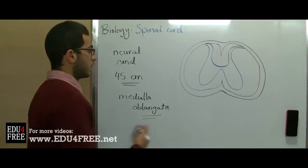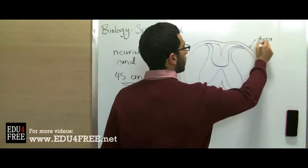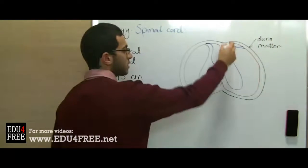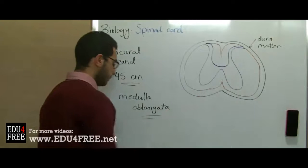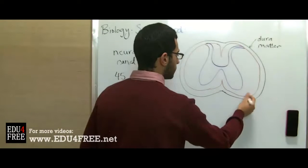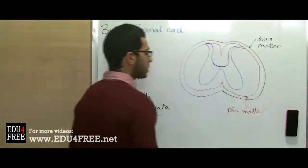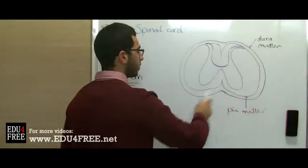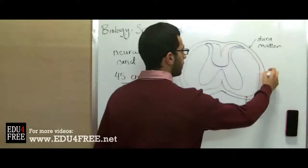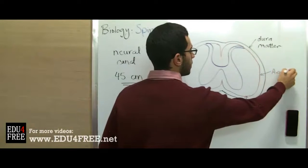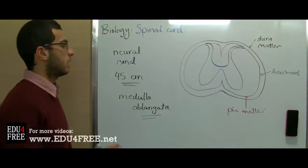They are the three same meninges that we mentioned last time. We have the dura mater, which sticks to the inner lining of the vertebral column or to the neural canal. We have the pia mater, which lines the spinal cord from the inside, and in between we have the arachnoid, which prevents mechanical trauma, just like the brain.